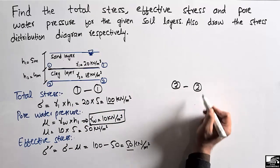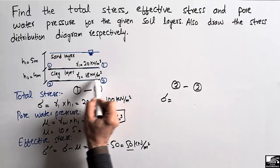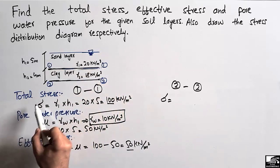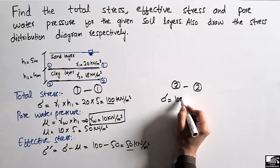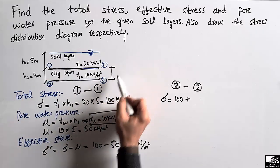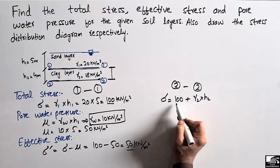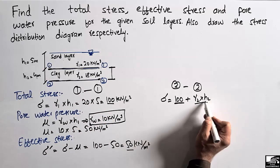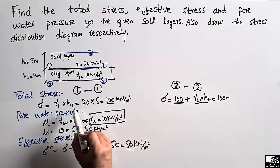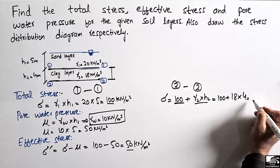Now to find the stresses at section 2-2, which is at the bottom of both layers: the total stress equals the stress at section 1-1 plus the contribution from the clay layer. Total stress equals 100 plus gamma 2 multiplied by h2, which is 100 plus 18 multiplied by 4, coming out to be 172 kN per square meter.